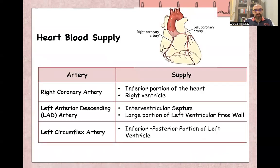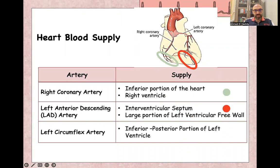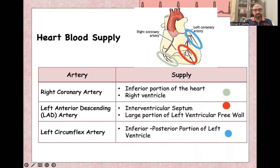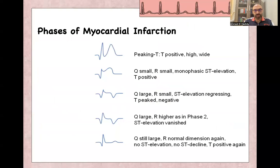For the blood supply of the heart, there is mainly the right coronary artery and the left coronary artery, which gives the left anterior descending artery and the left circumflex artery. The right coronary artery supplies the inferior part of the heart and the right ventricle. The left anterior descending artery supplies the interventricular septum and a large part of the left ventricle. The left circumflex artery supplies the inferior posterior part of the left ventricle. This is true in most patients.